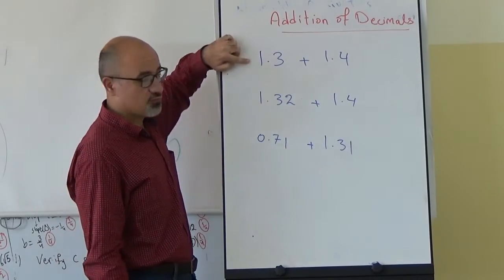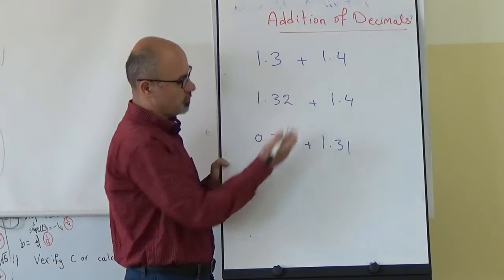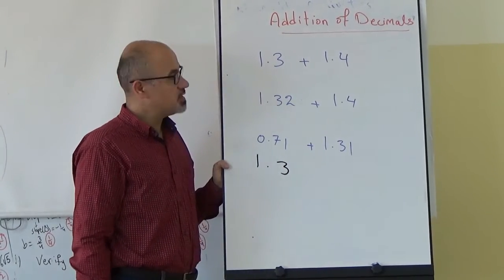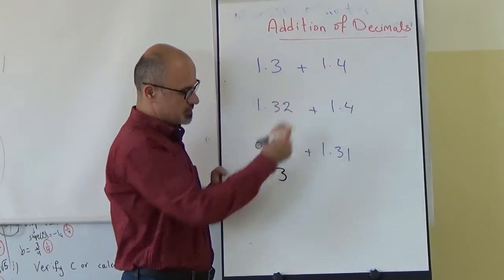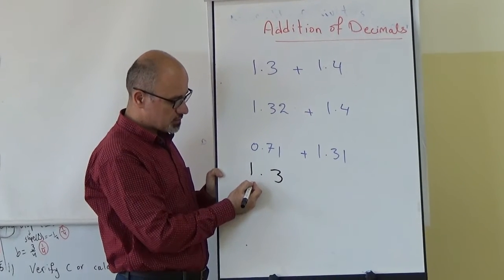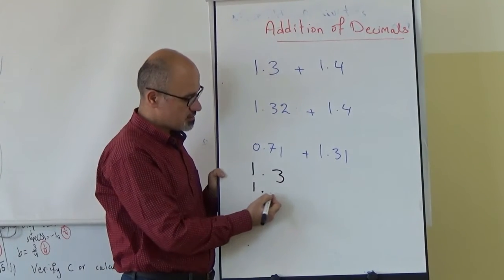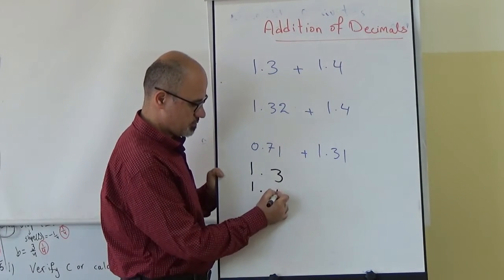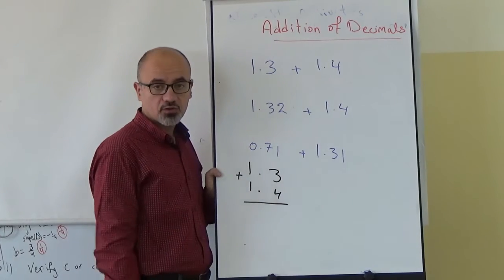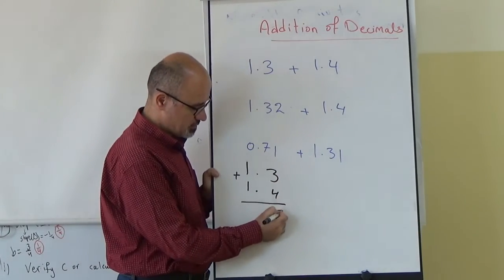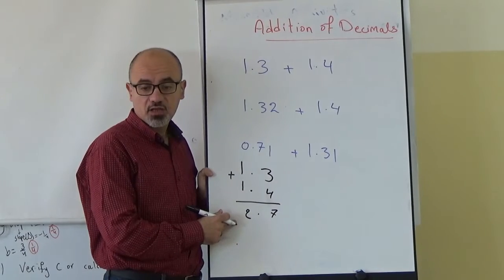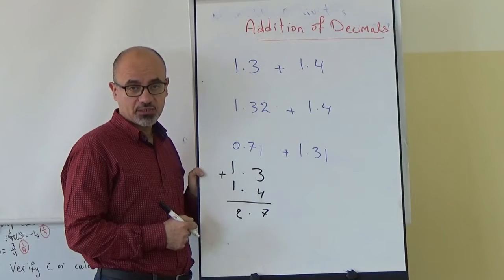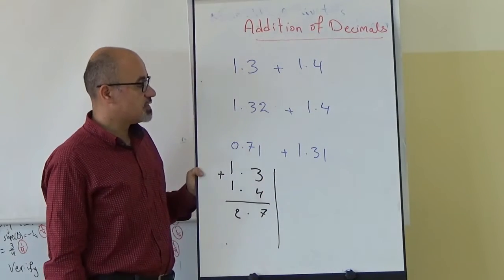Now let's work through the algorithms. For the first sum, 1.3 added to 1.4, we arrange them so the decimal point is above the other decimal point, ones above ones, and tenths above tenths. When we add we obtain 2.7 — 2 complete chocolate bars and 7 tenths, as we saw before.